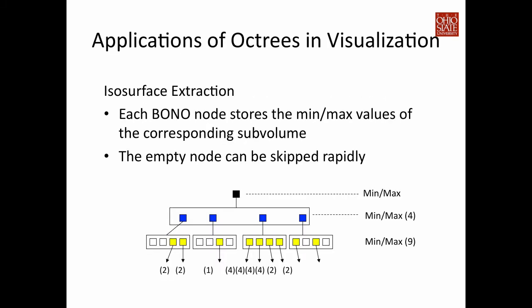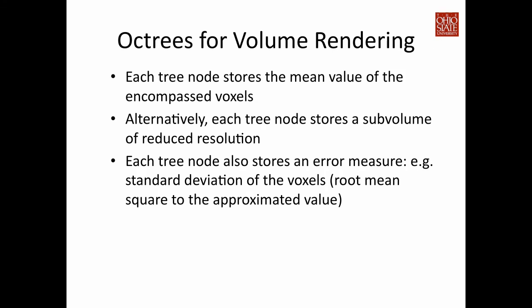Now let's talk about how OctTrees can benefit visualization algorithms. For isosurface extraction using a Branch-on-Need OctTree, at every node you store the min and max value. For an iso-value the user wants to compute, you check the min-max interval at each domain or subdomain. If the min-max interval does not contain the iso-value, you can be certain the isosurface does not intersect that domain, so you can skip searching all data elements within it completely.